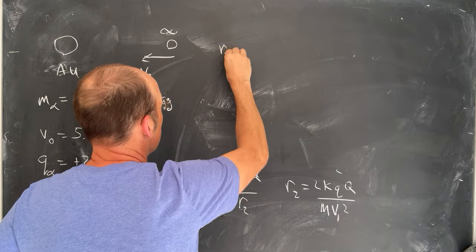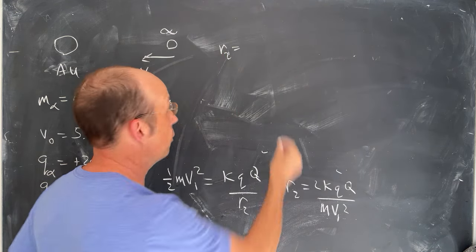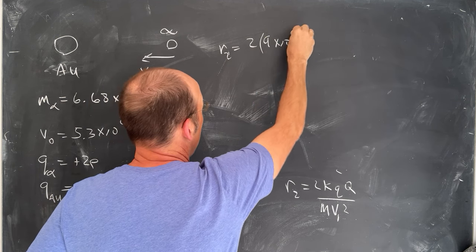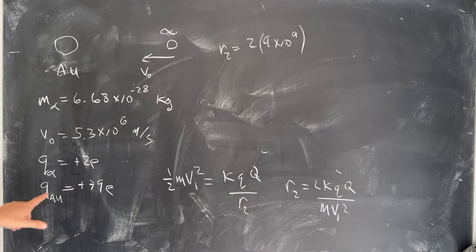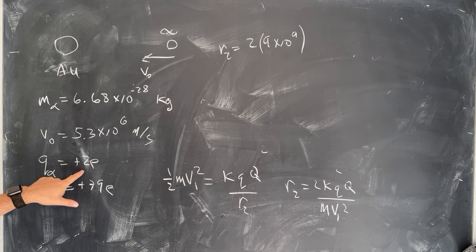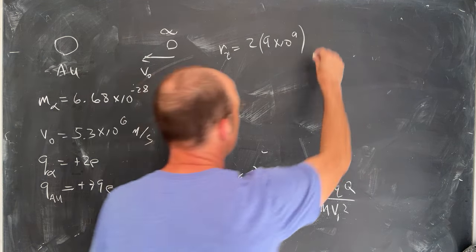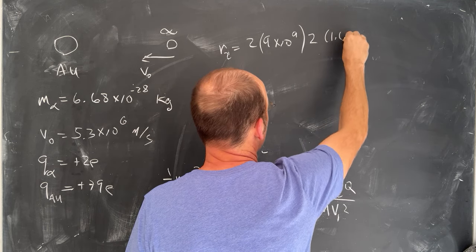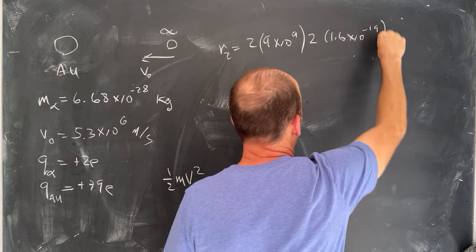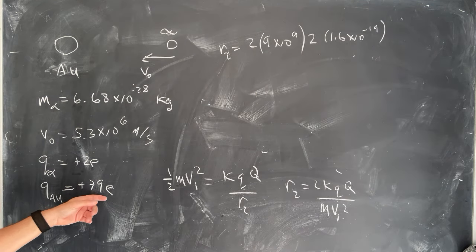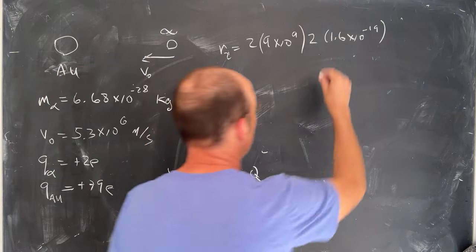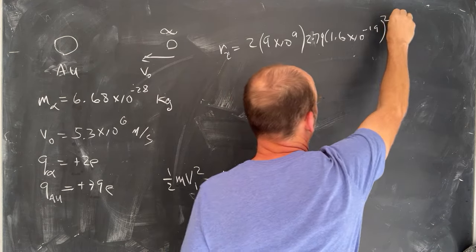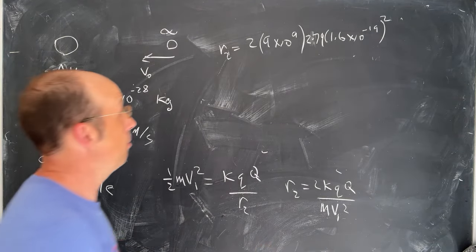So R2 is 2, I need to put in the number 2, I can look that up. K is the Coulomb constant, 9 times 10 to the ninth, I'm going to leave off the units. Q is 2 times e. So I'm going to write this as 2 times 1.6 times 10 to the negative 19, that's the charge of an electron. And then I have the charge of the gold is 79 times that. So I actually have 2 times 79, and this is going to be squared, because I have two e's in there.